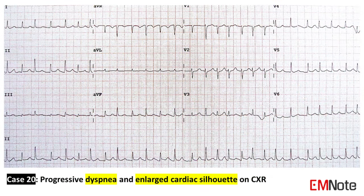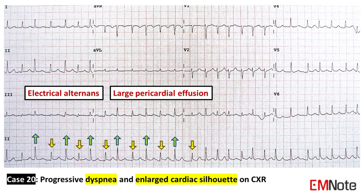Case 20: The patient presents with progressive dyspnea and an enlarged cardiac silhouette on chest X-ray. The ECG shows electrical alternans, an alternating QRS amplitude rhythm that is typically associated with the swinging heart surrounded by a large pericardial effusion. The large pericardial effusion can be demonstrated by ultrasound.